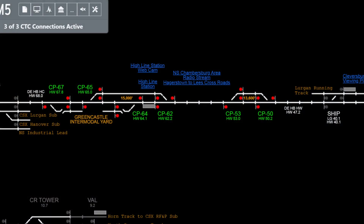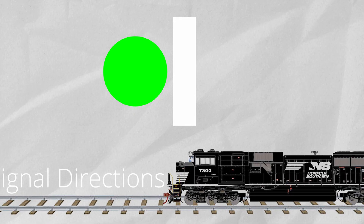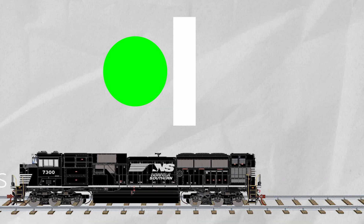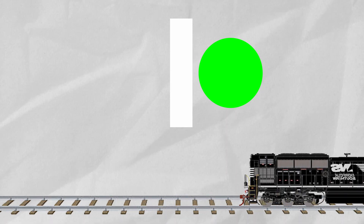With this knowledge, it is easy to know that a train will be coming soon in the direction the signal is facing when the signal is green. When the dot is on the left of the pole, the direction the train will be traveling will be from right to left on the layout. When the dot is to the right of the pole, the train is going the other direction, which is left to right.